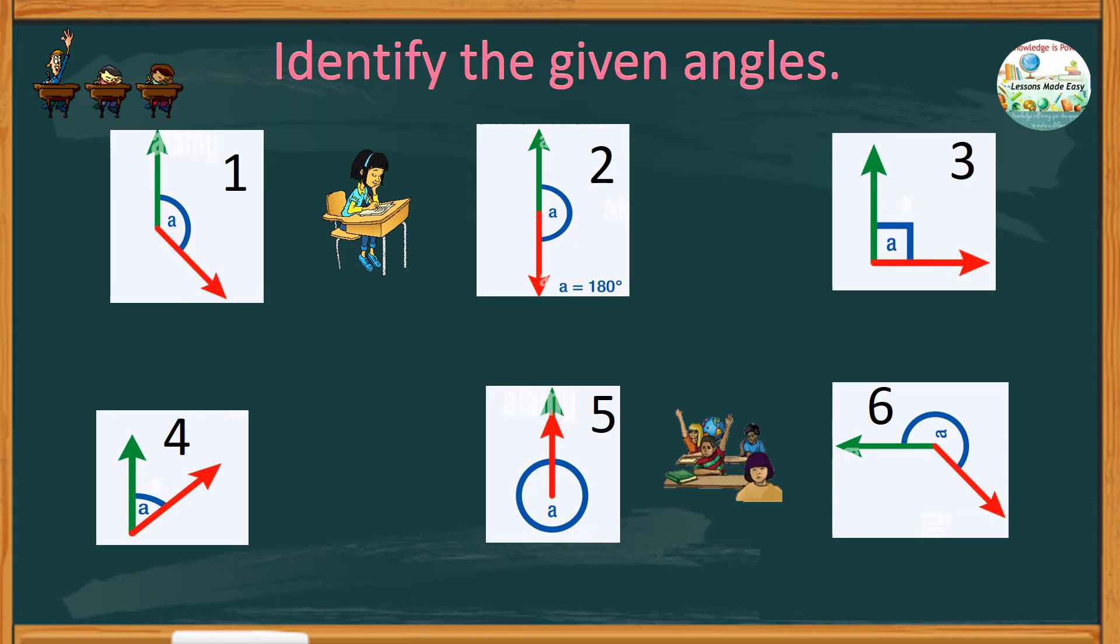Alright? Shall we check our answers? The first angle is more than 90 degrees. Therefore, it is an obtuse angle.